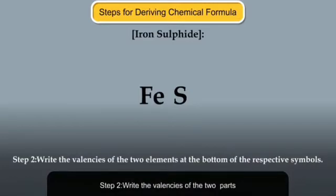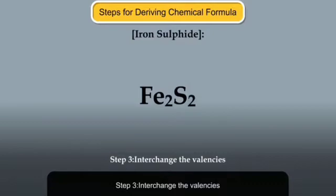Step 2. Write the valencies of the two parts at the bottom of the respective symbols. Step 3. Interchange the valencies.